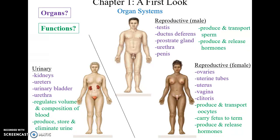The male reproductive system includes the testes, ductus deferens, prostate gland, urethra, and penis, involved in producing and transporting sperm and releasing hormones especially testosterone. The female reproductive system includes the ovaries, uterine tubes, uterus, vagina, and clitoris, and helps produce and transport oocytes, carry the fetus to term, and produce and release female hormones including estrogen and progesterone.